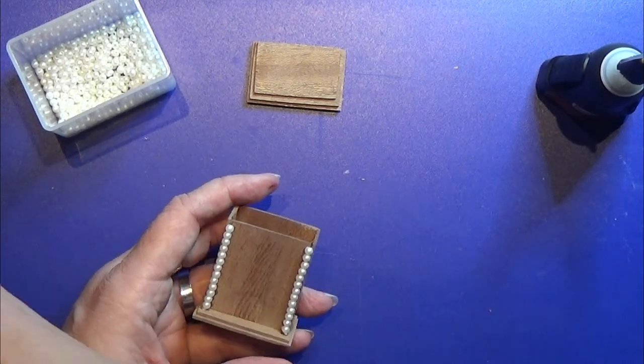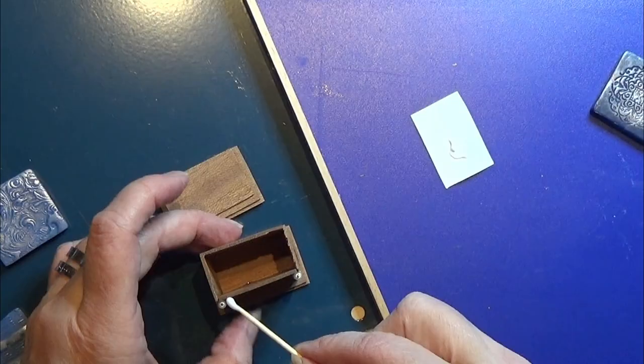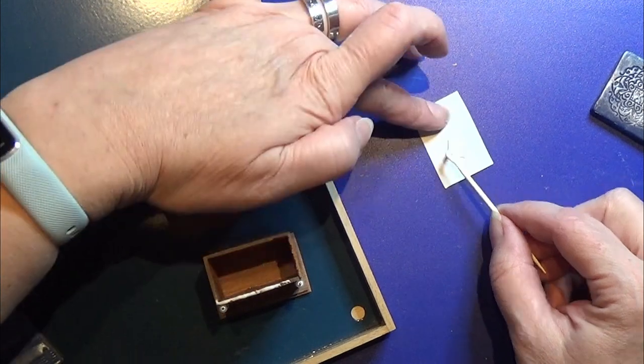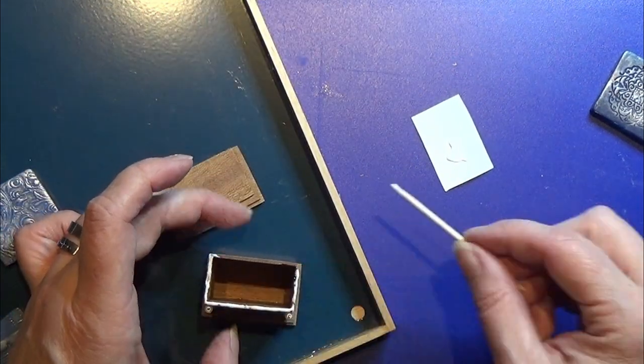Then I nipped off the excess of the eye pin and I glued on the top for this part. And now the bottom part of the grandfather clock is all done.